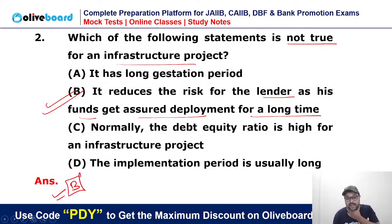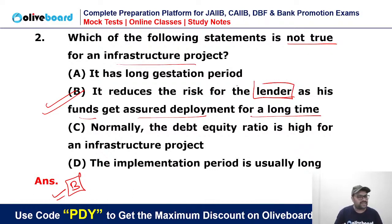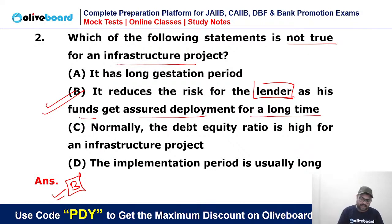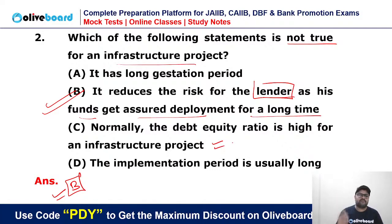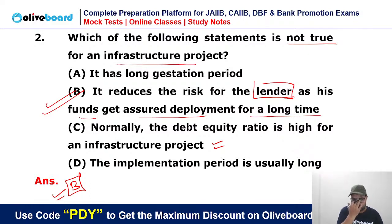Infrastructure projects — if successful, the lender gets money; if they fail, no money. Since 'not true' was asked, B is the answer. Statement B is incorrect — the lender's money is not at all safe and assured. Large companies doing big infrastructure projects take more loan and put in less of their own money because they don't have that much capital for large infrastructure projects.